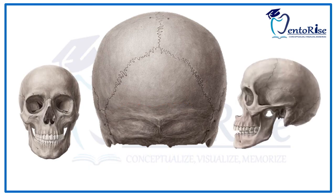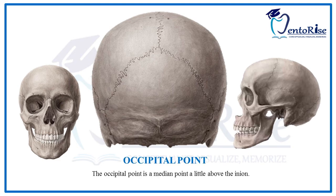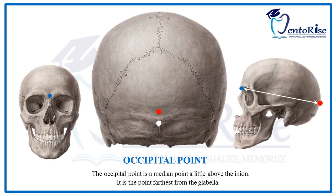The next feature of Norma Occipitalis is the presence of the occipital point. The occipital point is a median point a little above the inion. The inion is the most prominent point of the external occipital protuberance, marked in the figure with a white dot, while the occipital point is marked with a red dot. The occipital point is also the point farthest from the glabella. The glabella is the centermost point between the eyebrows, marked in the figure with a blue dot.